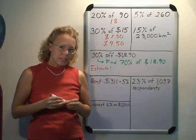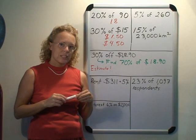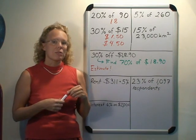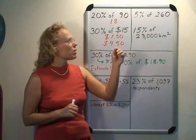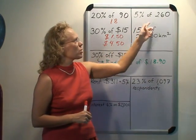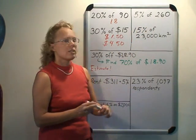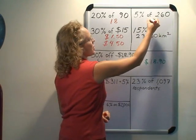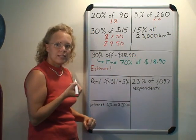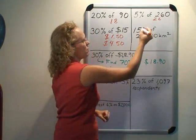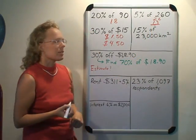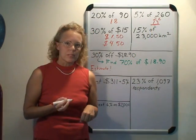5% of 260: we could find 1% of 260 and multiply by 5, but we can also find 10% first and then halve it. 10% of 260 is 26, and half of that is 13, so that is the answer.